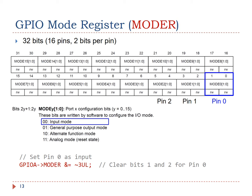Next, we need to program pin 0 of port A as digital input. The function of each pin is determined by two bits in the mode register. For example, bit 1 and bit 0 control the function of pin 0. When these two bits are 00, the pin is set as digital input. Here is the C statement which clears bit 1 and bit 0. This statement sets pin 0 of port A as digital input.